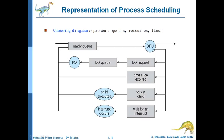If a process has forked a child - created another child process using a fork command - then the child has to execute, so the parent comes back to the ready queue. Also, if an interrupt has occurred, the process waits for the interrupt. Meanwhile the ISR may execute, and after getting suspended the process comes back to the ready queue. Like this, the process keeps moving from one queue to the other.